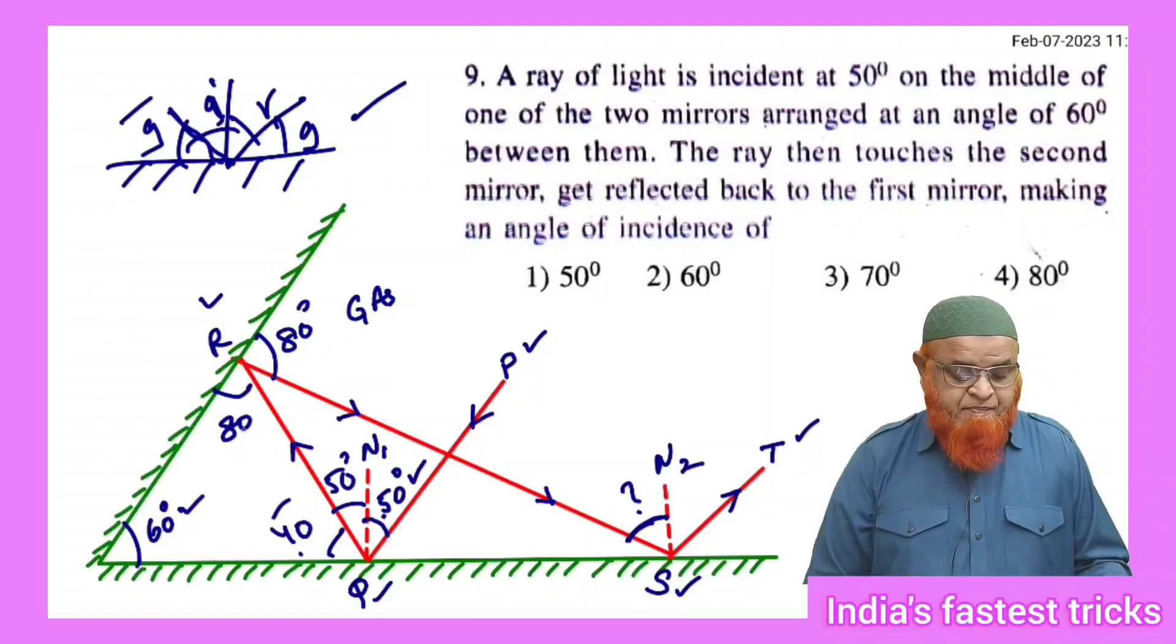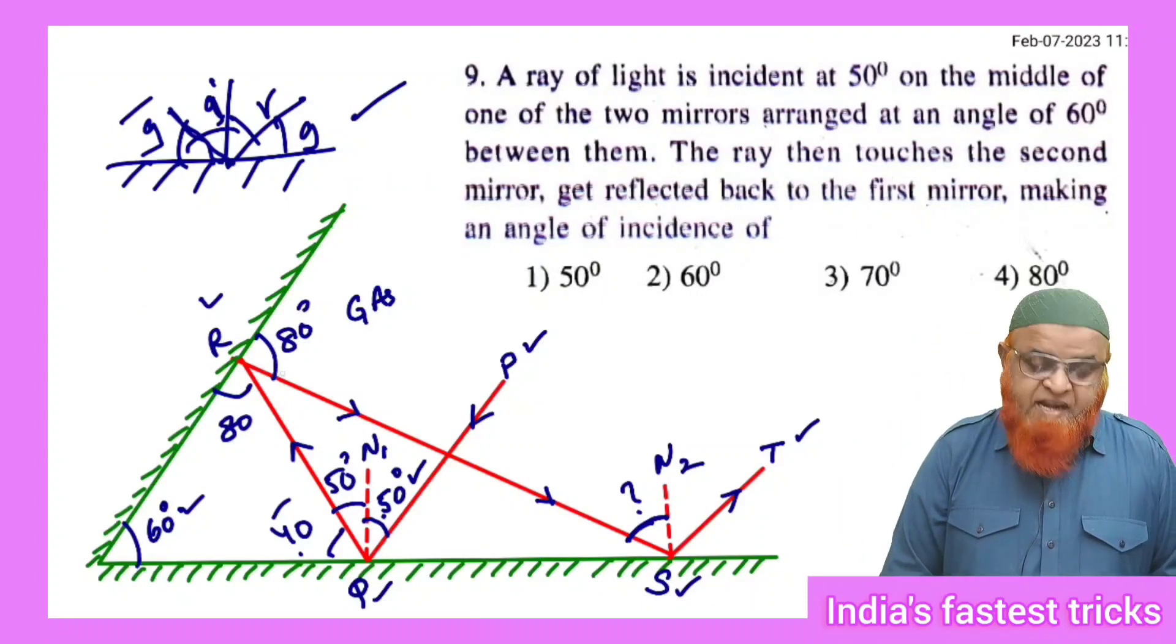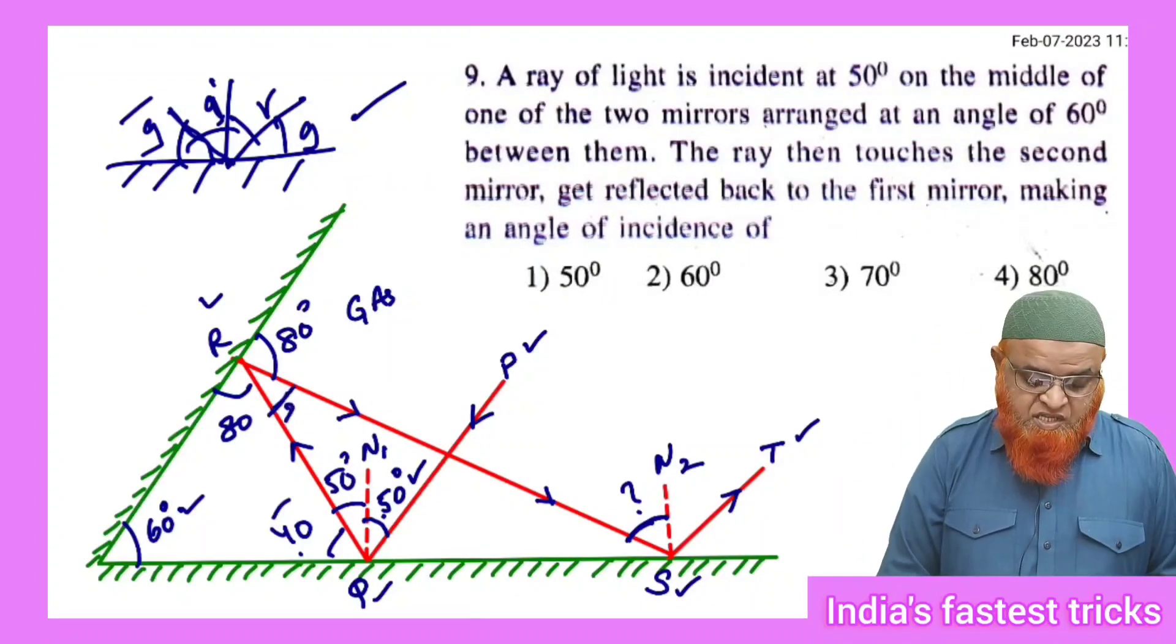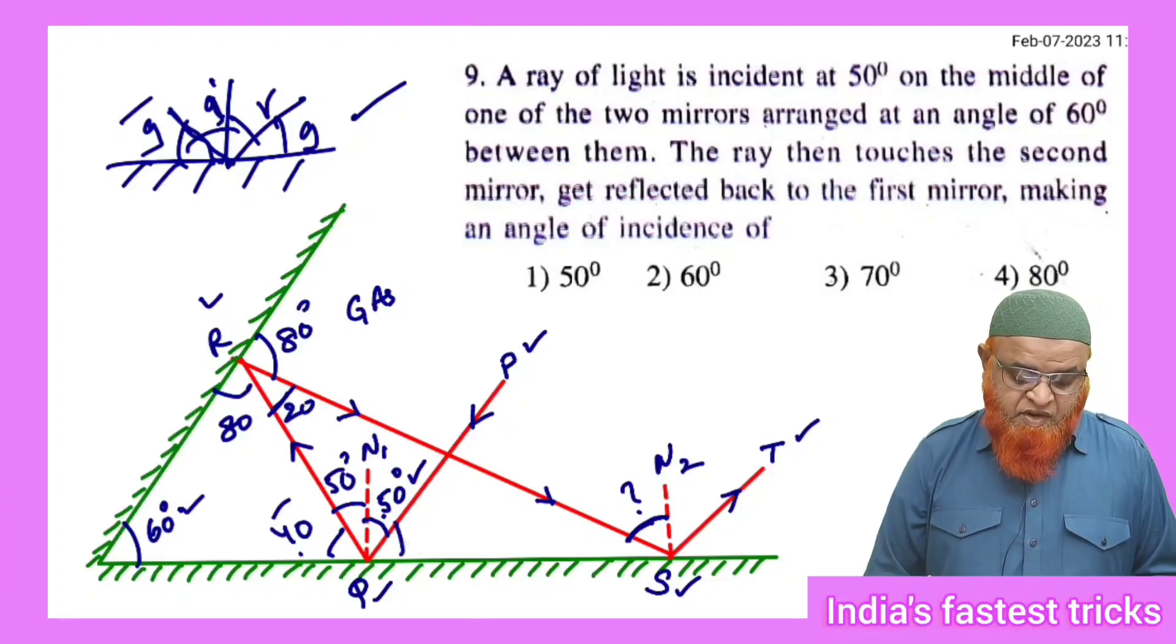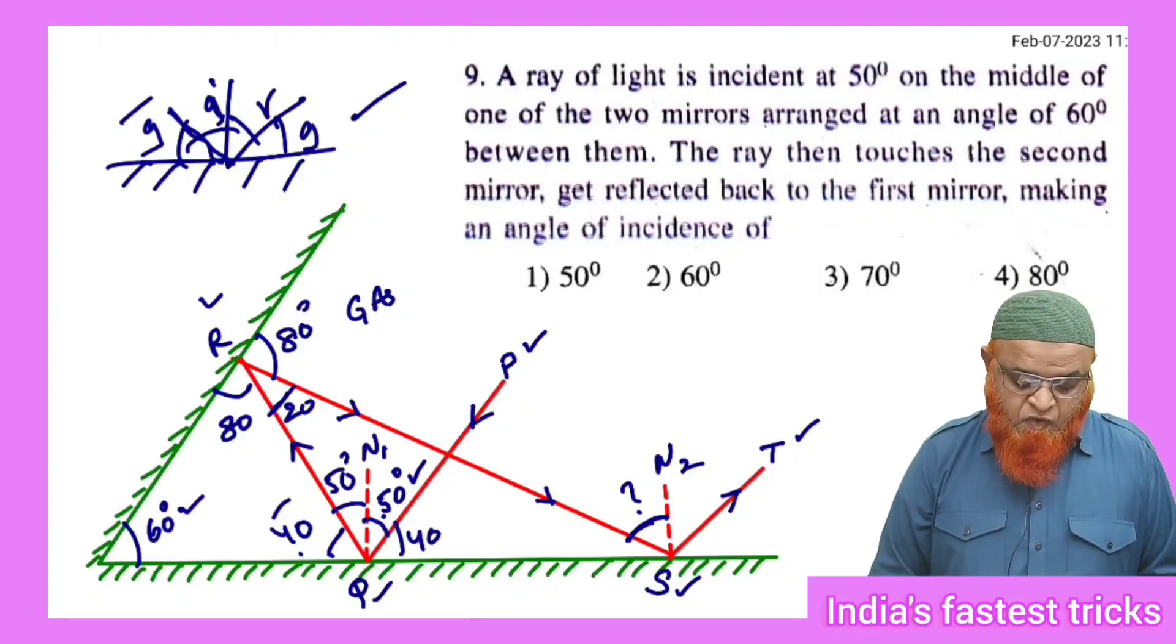So if this is 80 and 80, it is 160. That means this is going to be 20 degrees, this is going to be 20 degrees, and this is going to be 40 degrees.